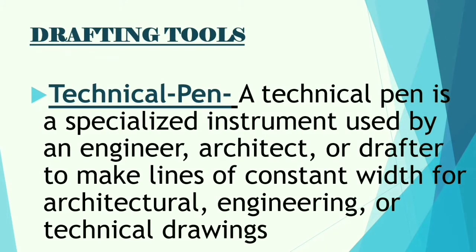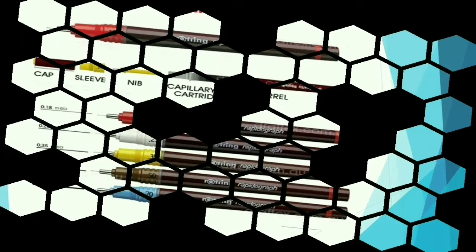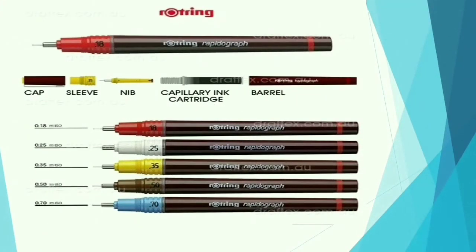Now the technical pen. A technical pen is a specialized instrument used by an engineer, architect, or drafter to make lines of constant width for architectural, engineering, or technical drawings. As you can see, it comes in different types with different line thicknesses.